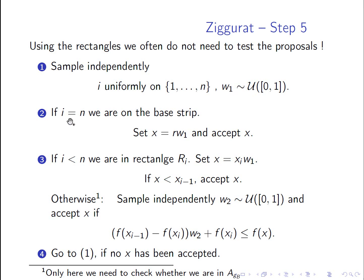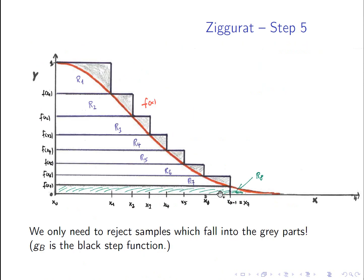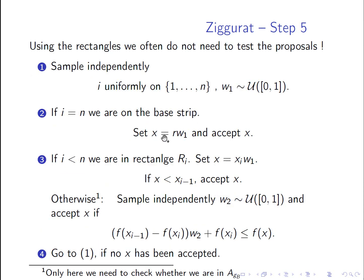Well, if I is equal to n, then we are in the base strip. What does it mean? So we are in the base strip. And because we cut off the tail, so we cannot be in this part here, but we are only in this part. But here, we do not have to test anything. We are clearly under the red curve. So what we do, we just set X equal to R times W1 and we accept X. So if we are in the base strip, we don't have to do any tests.